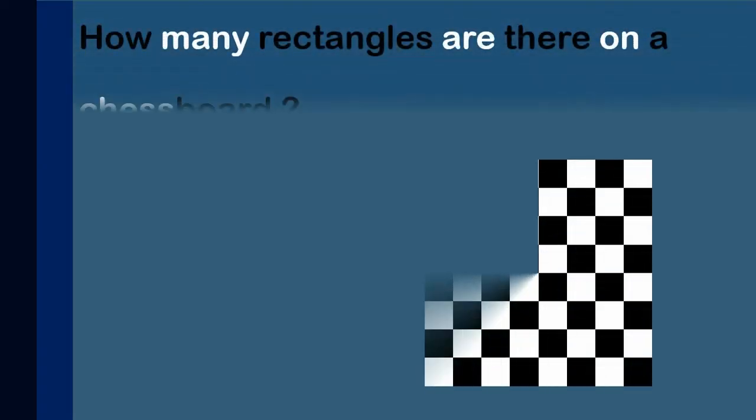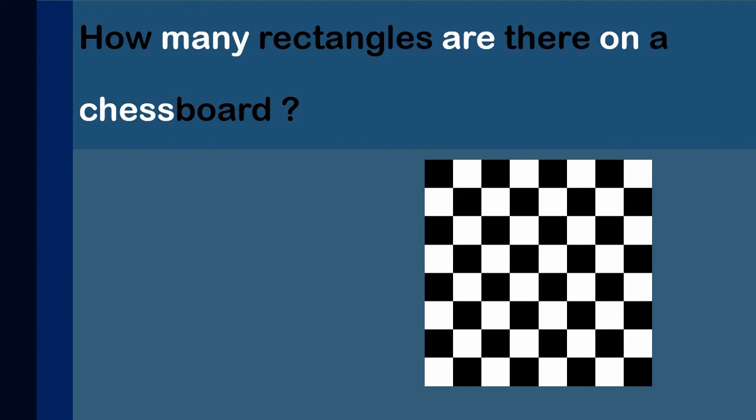So here comes the question. How many rectangles are there on a chessboard? Yeah, you heard it right, on a chessboard. The options are: A) 64, B) 512, C) 1296, D) 4096.